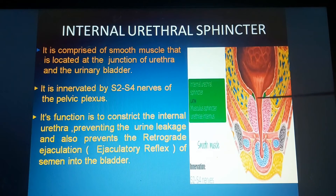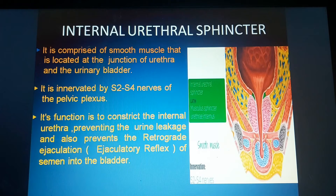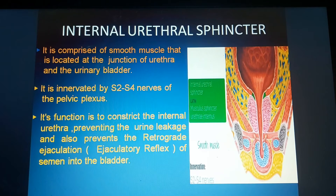This is the internal urethral orifice. It is innervated by S2, S3, S4. Its function is to constrict the internal urethra, preventing urine leakage, and also to prevent the retrograde ejaculation of semen into the bladder.